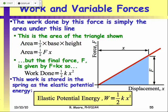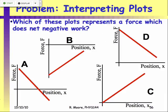The typical type of problem involves things like bungee jumpers. Which of these plots represents a force that does a net negative amount of work?